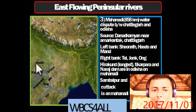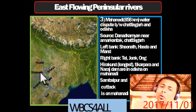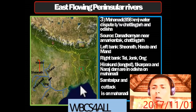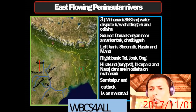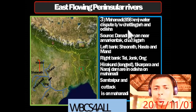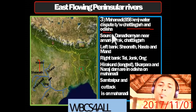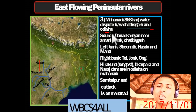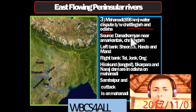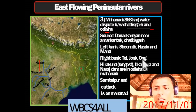Now the Mahanadi: 858 km long, with water dispute between Chhattisgarh and Odisha. Its source is Dandakaranya near Amarkantak in Chhattisgarh. Left bank tributaries are Sheonath, Hasdeo, and Mand. Right bank tributaries are Tel, Jonk, and Ong. Note that Tel is the tributary of Mahanadi, not of any other river.